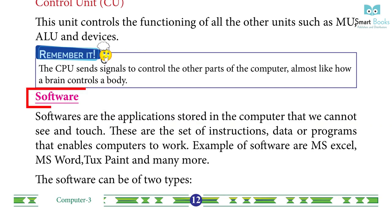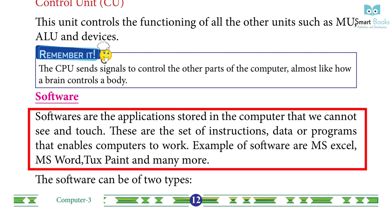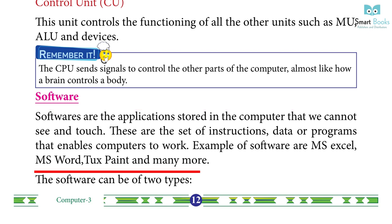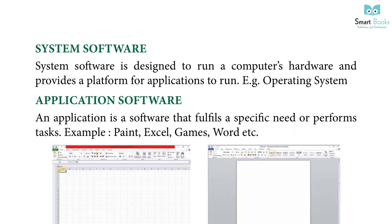Software: Software are the applications stored in the computer that we cannot see and touch. These are the set of instructions, data or programs that enable a computer to work. Examples of software are MS Excel, MS Word, TuxPaint and many more. Software can be of two types: System Software and Application Software.